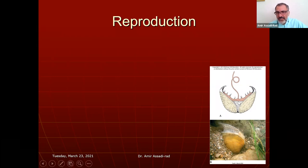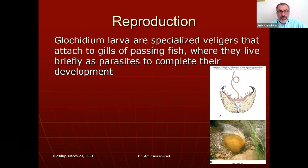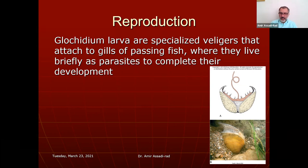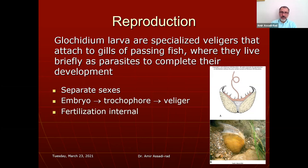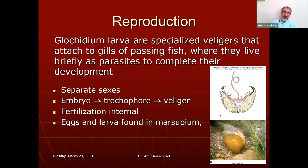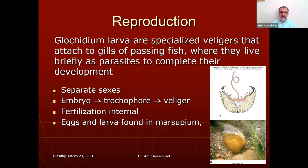Glochidia larvae are specialized veligers that attach to the gills of passing fish, act as parasites to complete their development — they suck blood — then let go. Sexes are separate; there is a trochophore larva, veliger larva, and internal fertilization. Eggs and larvae are found in the marsupium of the gills as part of the gills.